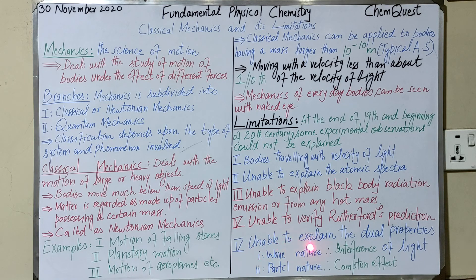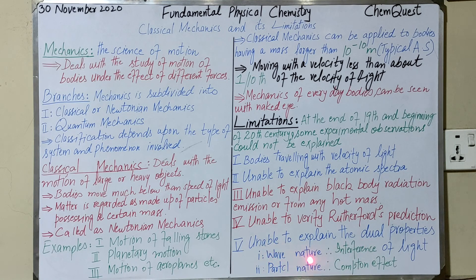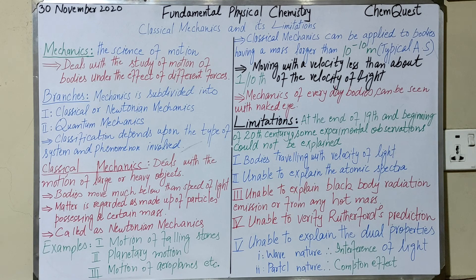The fifth and perhaps most major limitation: classical mechanics is unable to explain the dual properties of light. Some experiments show light behaving as waves — like interference — which classical mechanics can explain. However, other phenomena, such as the Compton effect, show light behaving as particles, and Newtonian mechanics was unable to explain the particle nature of light.